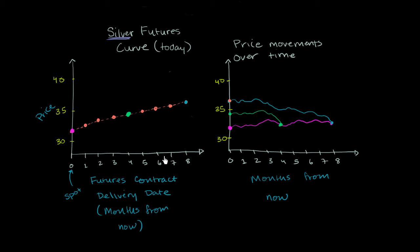And this futures curve right over here, when you have a delivery date that's zero months from now, that's essentially today, that's the market price. That is the actual market price of that commodity. In this example, the commodity is silver.